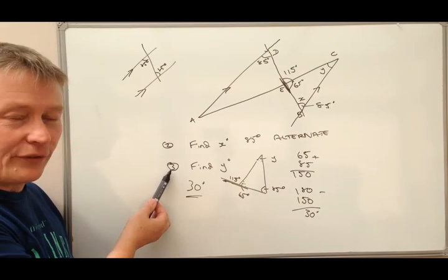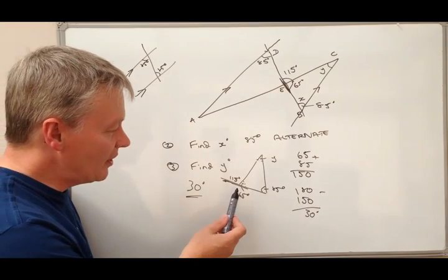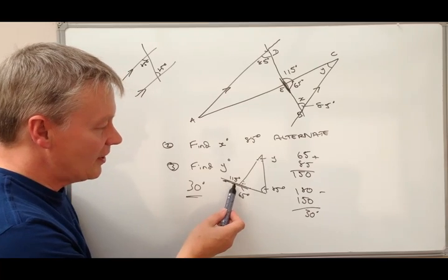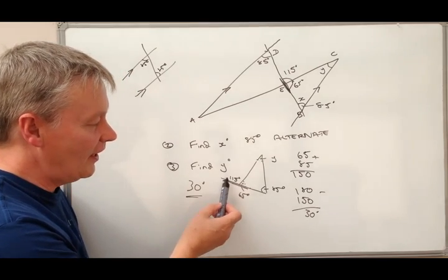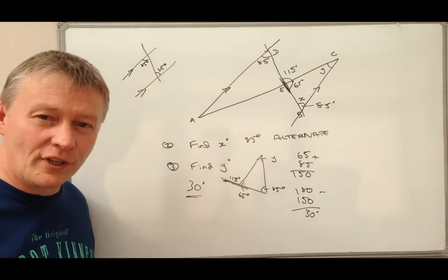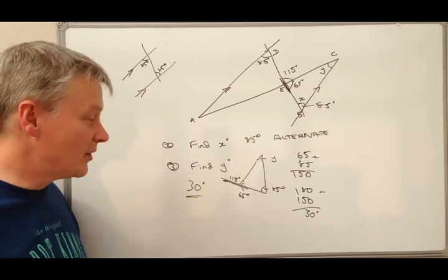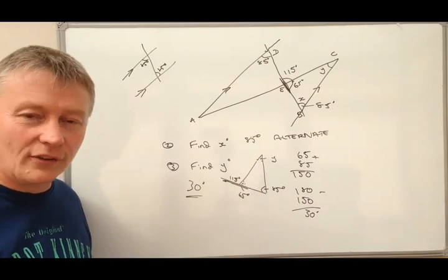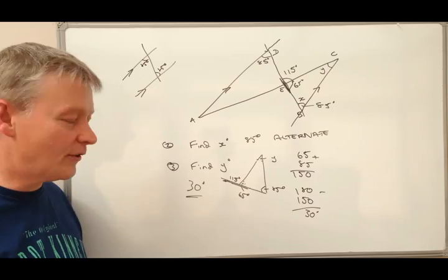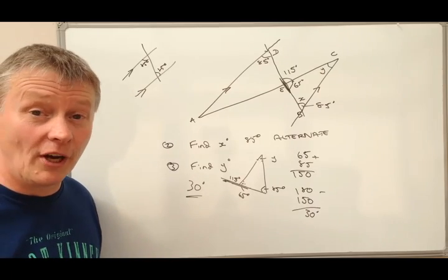Because bearing in mind this is a three marker. So if I was you, I would probably say that this is a straight line and the degrees on the straight line is 180 degrees. And then also I would say that the interior angles of a triangle also add up to 180 degrees. That will get you your three marks.